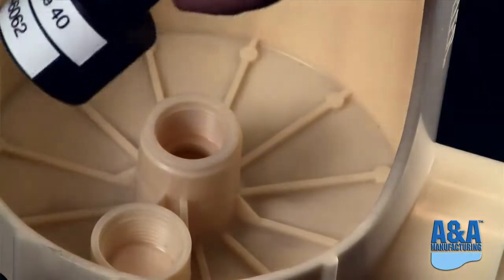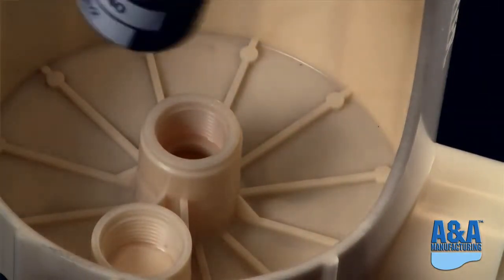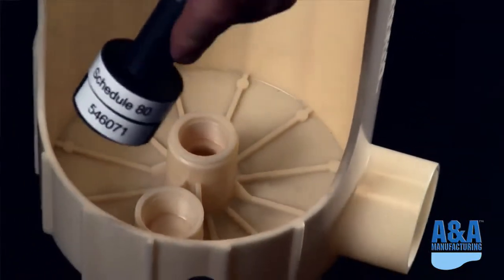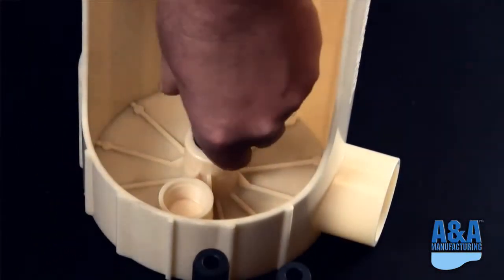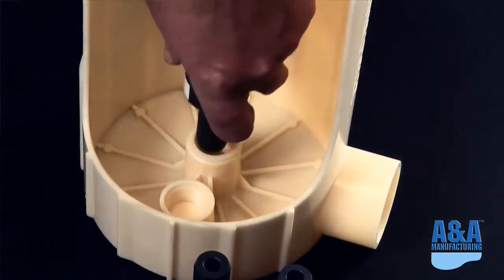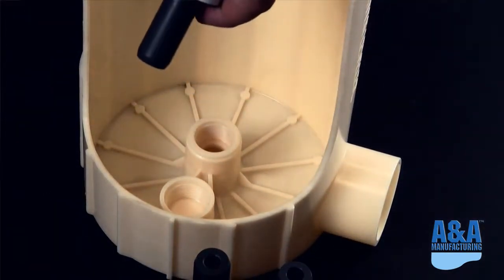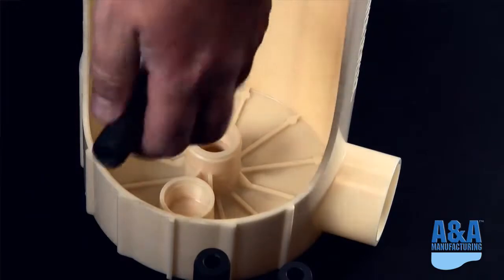So once again, you've got one for a Schedule 40. You can see it's got a little bit longer throat and a different diameter throat on it. And then finally, the Schedule 80 has the smallest because of the increased wall thickness. But they all work the same way. They all drop down inside there. You will have to drill out that little ring to get it in. But it's a nice, easy, quick fix.